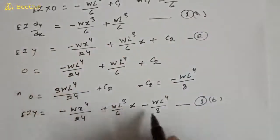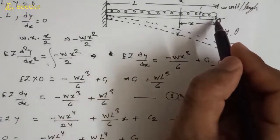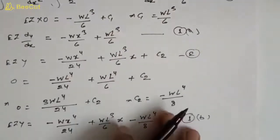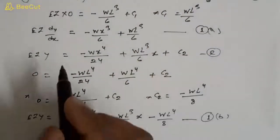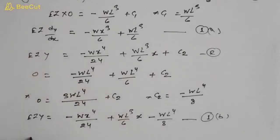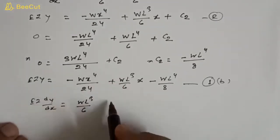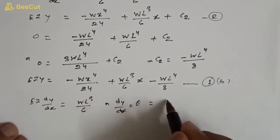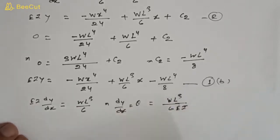Equation 1a is for slope and equation 1b is for deflection. At the free end, x = 0. Substituting x = 0 into equation 1a, we get EI dy/dx = wl³/6. Therefore the slope at the free end is: θ = dy/dx = wl³/6EI. This is the equation for slope.